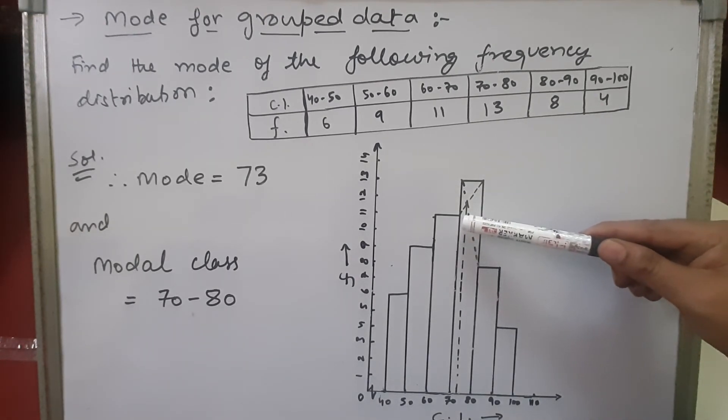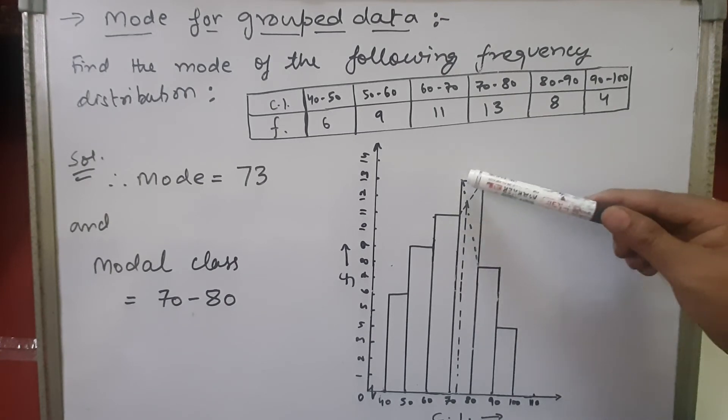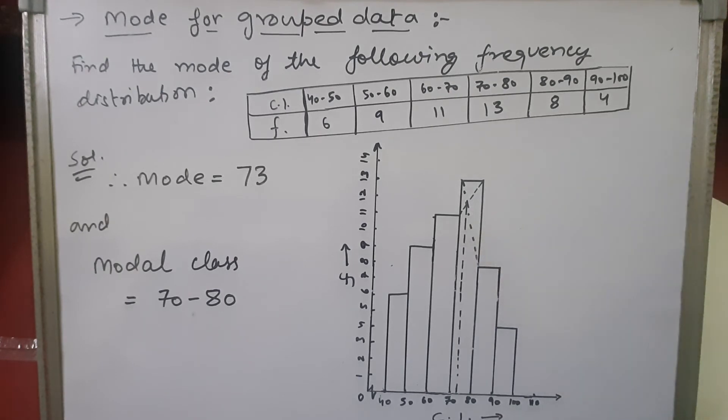Like this, diagonally. And where these diagonals intersect, suppose at this point these two diagonals intersect, we drop a perpendicular on the x-axis from this point. So this particular value will be the mode of the given grouped data.